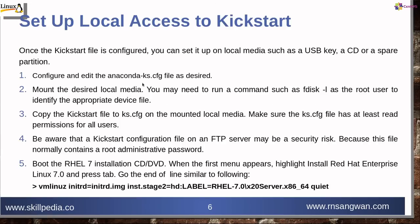To set up local access to kickstart, once the kickstart file is configured, you can place it on local media such as a USB key, CD, or a spare partition. First, configure and edit anaconda-ks.cfg as desired. Second, mount the desired local media — you may need to run fdisk -l as root to identify the appropriate device file. Third, copy the kickstart file to ks.cfg on the local media and ensure the ks.cfg file has at least read permissions for all users.